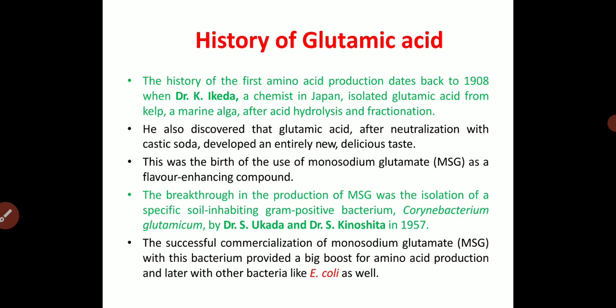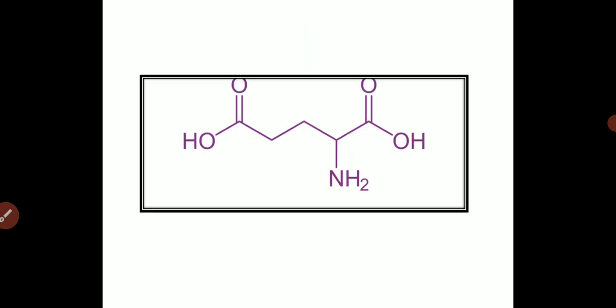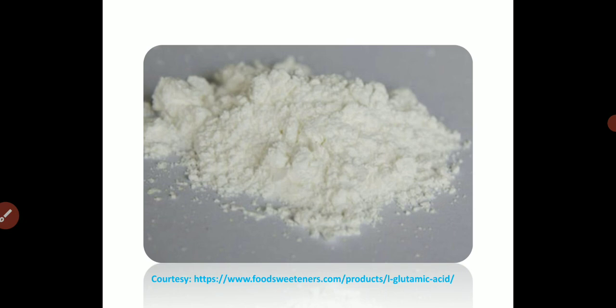We can use any kind of microorganism, but if the microorganism has the capacity for the production of a specific metabolite, we can employ it; otherwise, genetic modification can be applied and that E. coli strain can be used for production of glutamic acid. This slide shows the structure of glutamic acid, and another slide shows the commercial glutamic acid in the form of powder crystals, used in fast food items like fried rice, noodles, and chicken rice to enhance the taste.